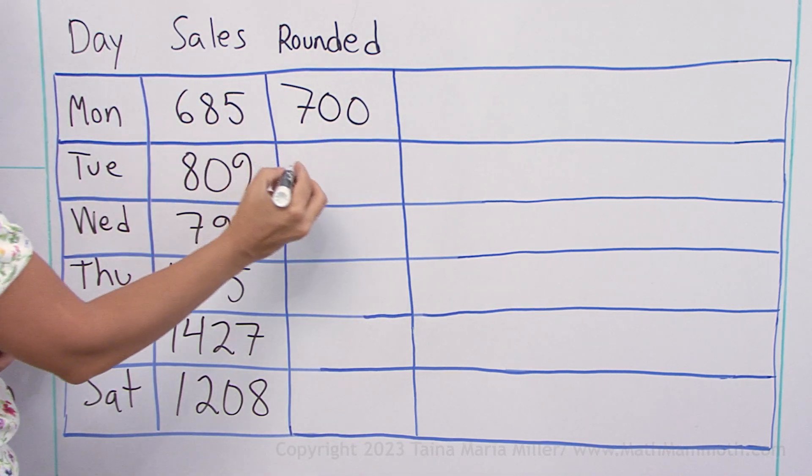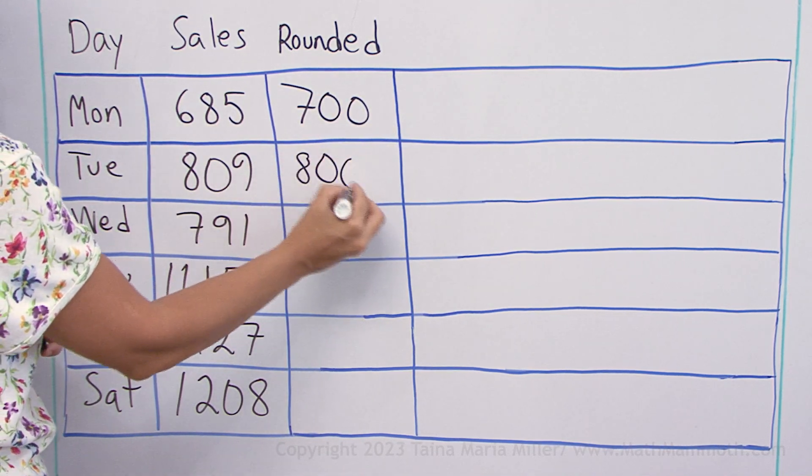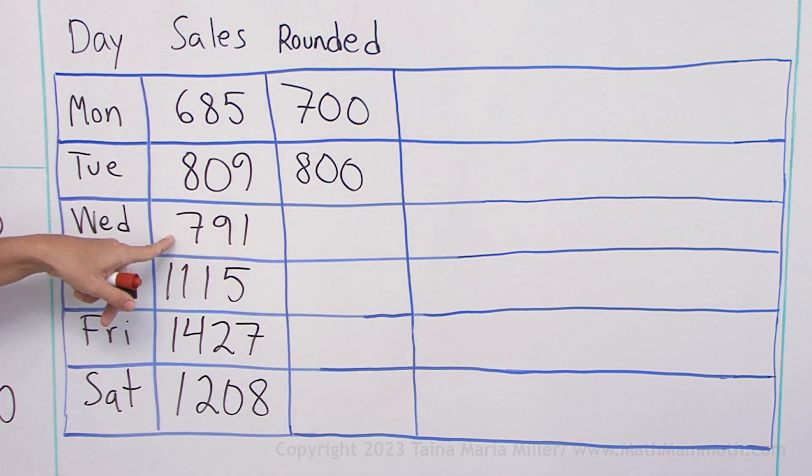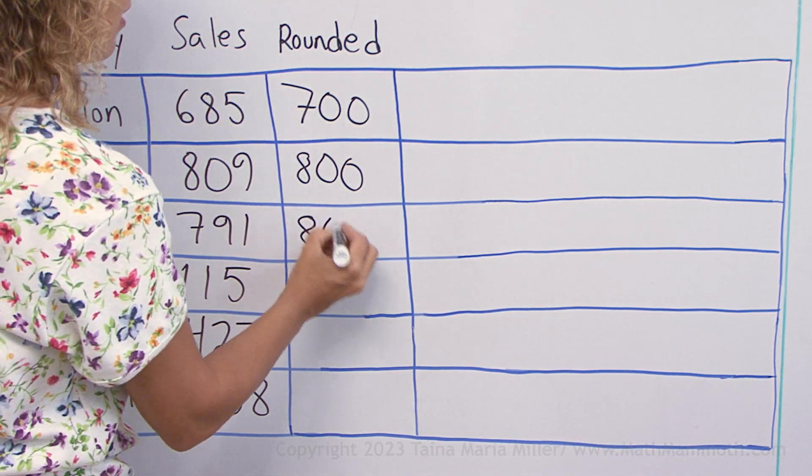This one would be closest to 800, right? And this one, 791, also gets rounded to 800.